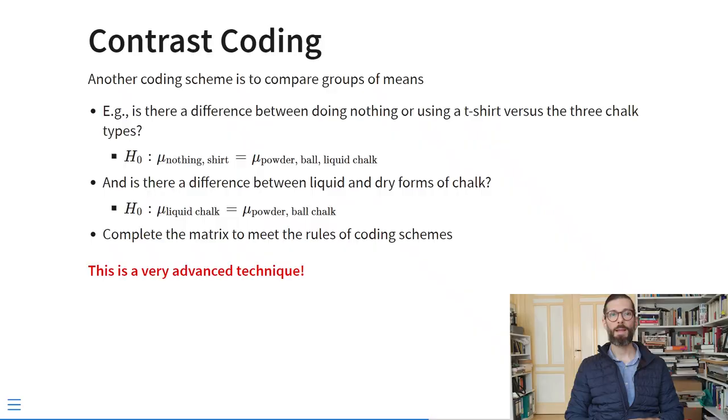That covers effects coding. There is another coding scheme: contrast coding. Contrast coding allows us to compare groups of means against each other. Someone who believes in chalk effectiveness may want to compare the two conditions that didn't use chalk against the three that did — asking whether there's a significant difference between doing nothing or using a t-shirt versus using any of the three chalk methods. We could also ask whether there's a difference between liquid chalk and dry forms of chalk.